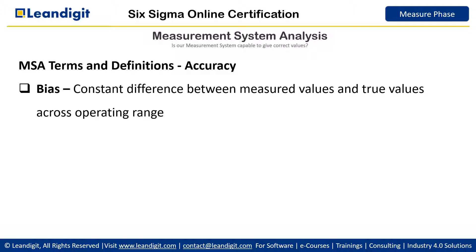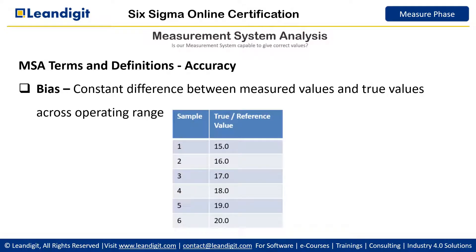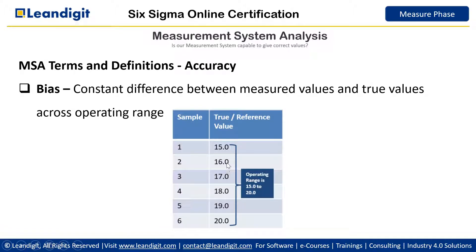Bias is a constant difference between measured values and the true value across the operating range. For example, we have taken six samples across the entire operating range, where the value of the first sample is exactly 15 and the value of sample 2 is exactly 16. These values are measured using a master instrument. 15 to 20 is the operating range of the process.